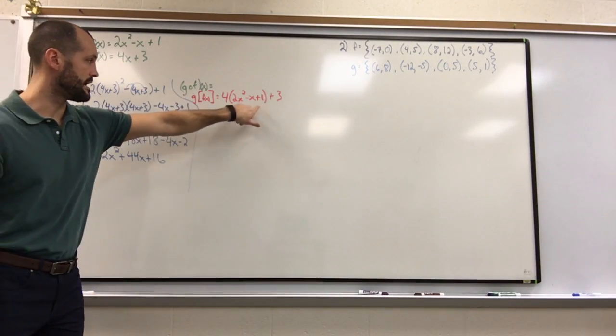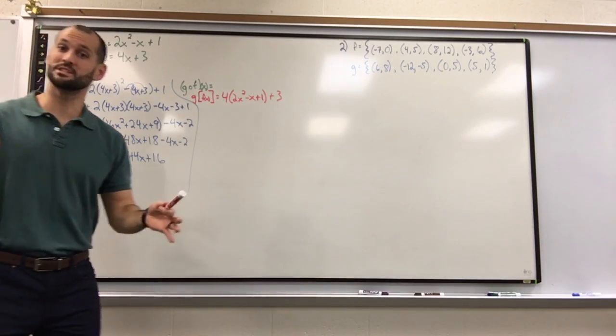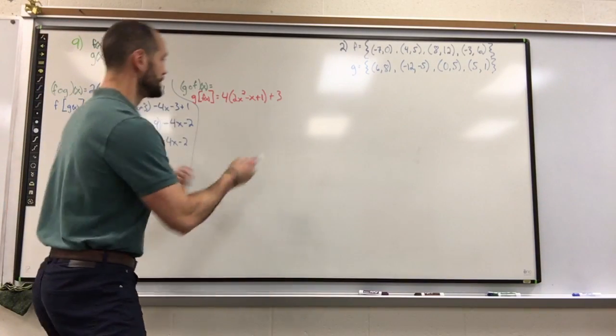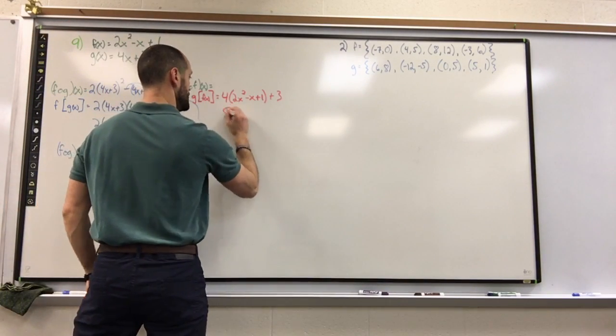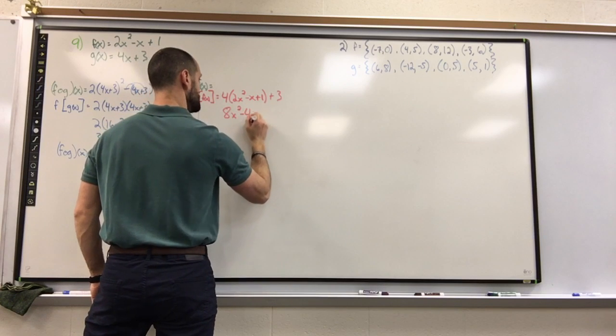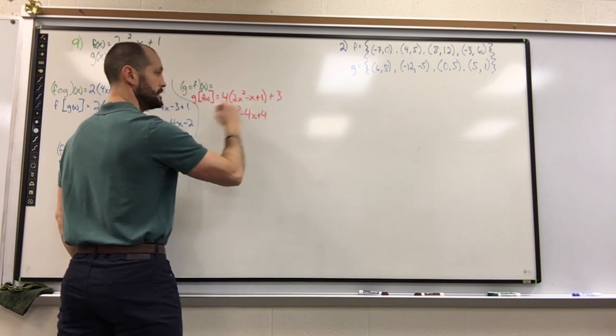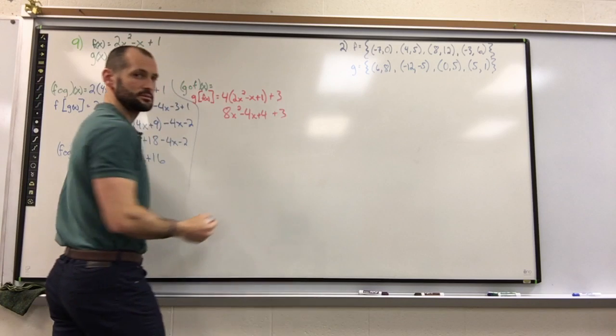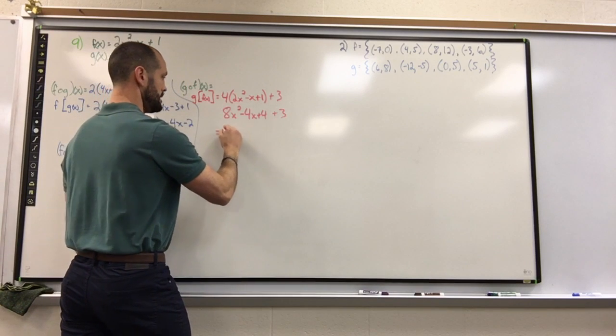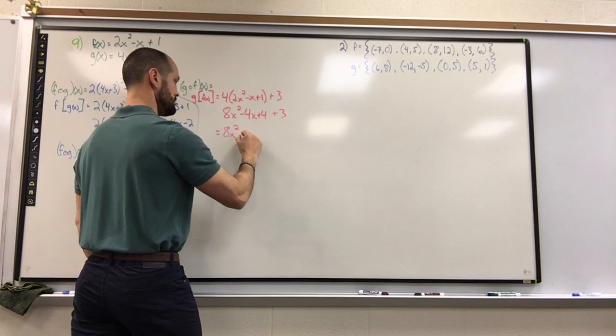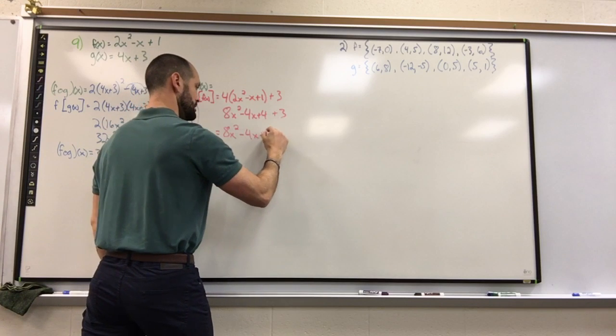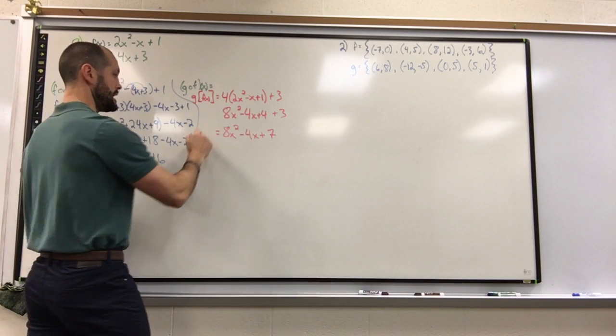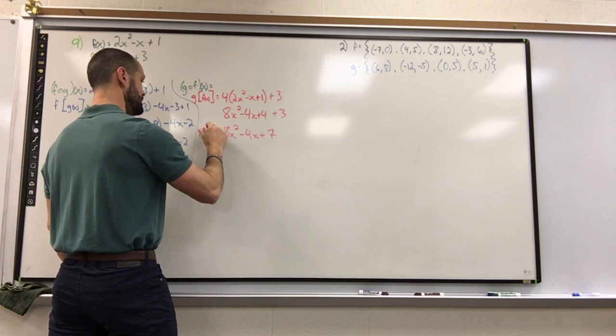This one's a little nicer. Let's simplify. Distribute the 4: you get 8x squared minus 4x plus 4, then we just got the plus 3. Oh, this one was much nicer: 8x squared minus 4x plus 7. And that is g of f of x.